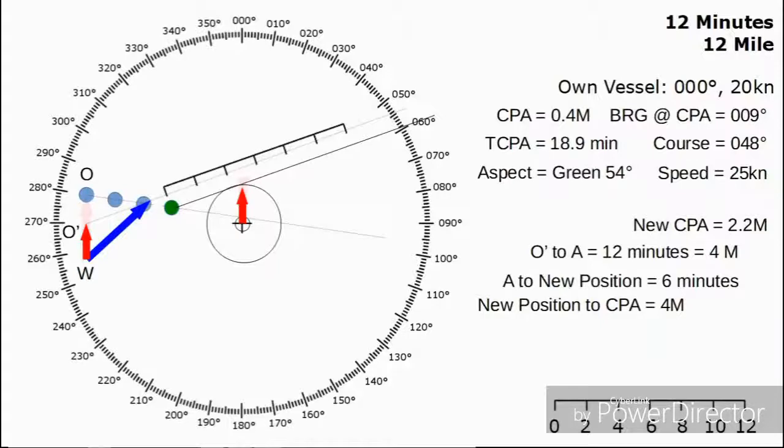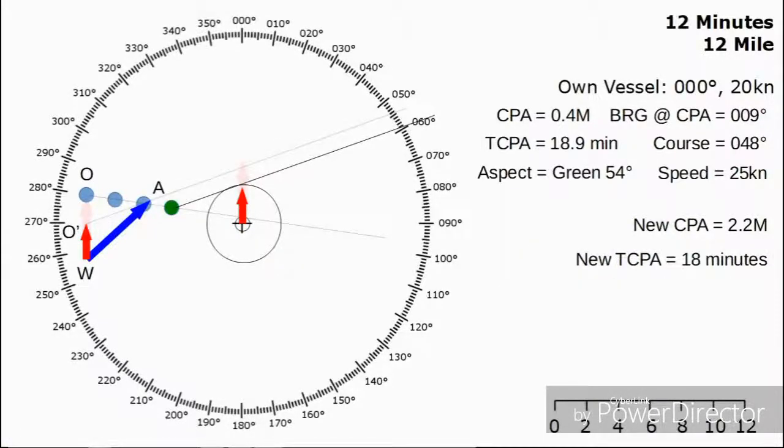From that, we can work out the new time to the closest point of approach, which is six minutes, the difference between the dots, plus 12 minutes, the difference from the new dot to the new CPA, which comes out as 18 minutes. Our new TCPA is 18 minutes.